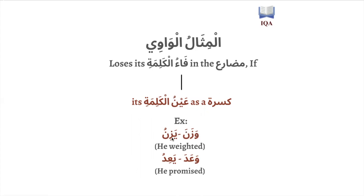So wazana becomes yazinu and wa'ada becomes ya'idu. Originally it should have been yawzinu and yaw'idu, but because this is mithal al-wawi and the ayn-kalima in the mudara' has a kasra, it loses its waw. The waw goes away and we just keep the mudara' prefix ya, so ya'idu — the first radical waw is dropped. Wazana becomes yazinu, wa'ada becomes ya'idu, not yawzinu or yaw'idu.